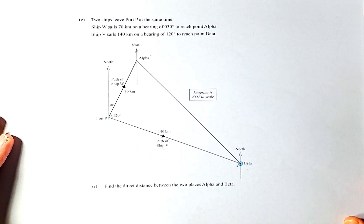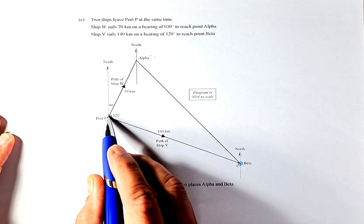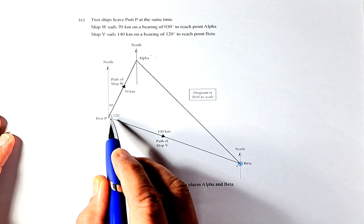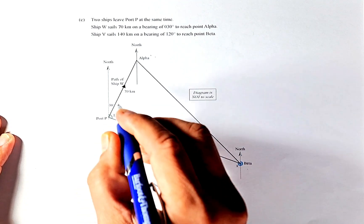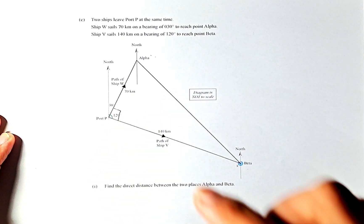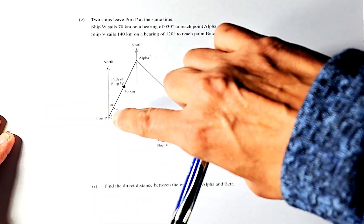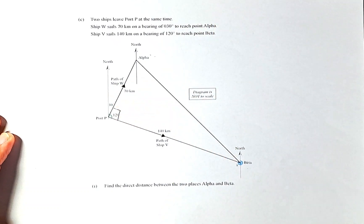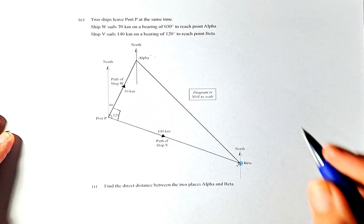So the first question is find the direct distance between the point alpha and beta. If you look properly this is actually a right angle triangle because the angle from here to here is 120 and that is 30 degrees. So once you have a right angle and you know the distances 70 and 140, you can use your Pythagoras theorem to solve this.